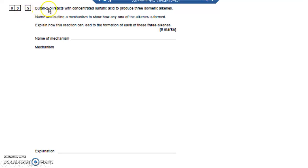So question 3.5. Let's have a look at what we've got here. We've got butan-2-ol. So we've got four carbons with an OH on carbon number 2. It's a secondary alcohol because the C with the OH is in the middle of a chain connected to two other carbons either side.